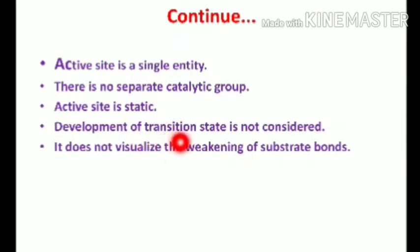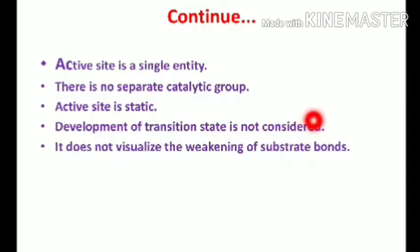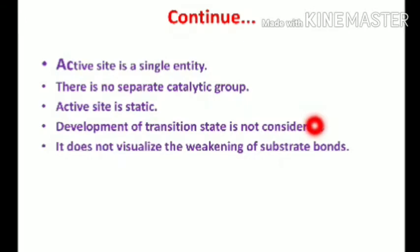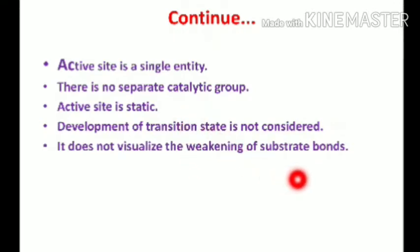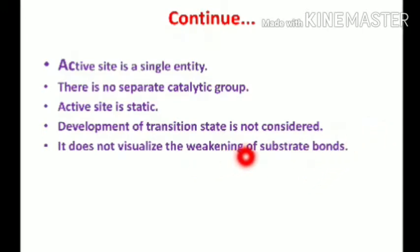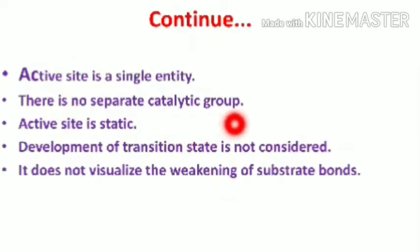It also states that the active site is static — there are no conformational changes in the active site of the enzyme. The development of a transition state is not considered here. Additionally, it does not visualize the weakening of substrate bonds that occurs after enzyme binding in order to convert the substrate into product. These are the main drawbacks of the Lock and Key model.